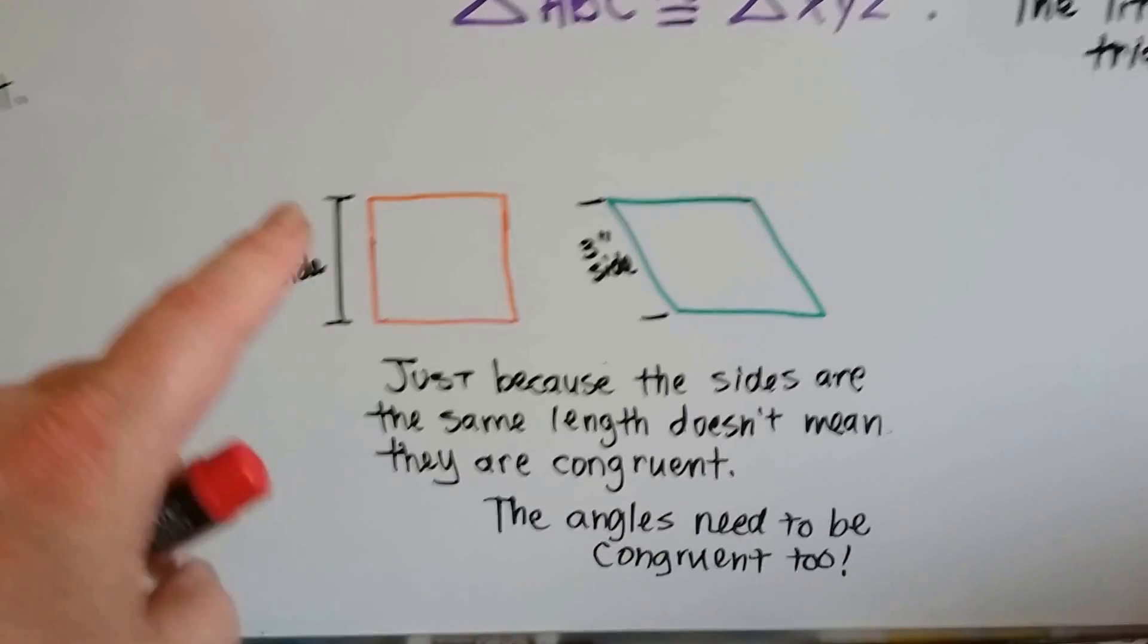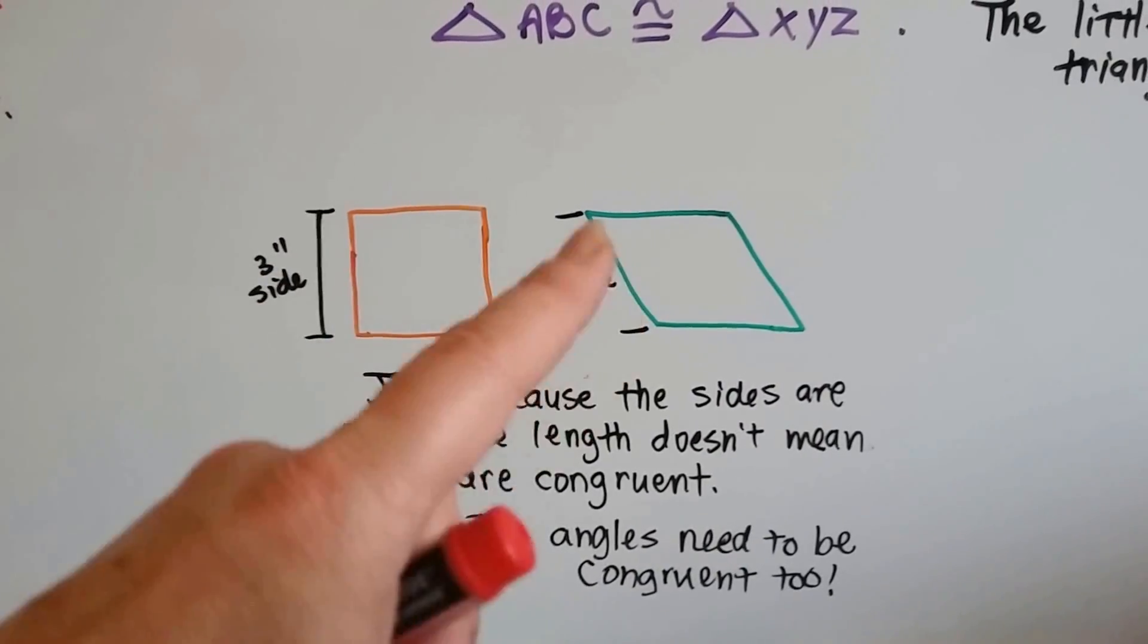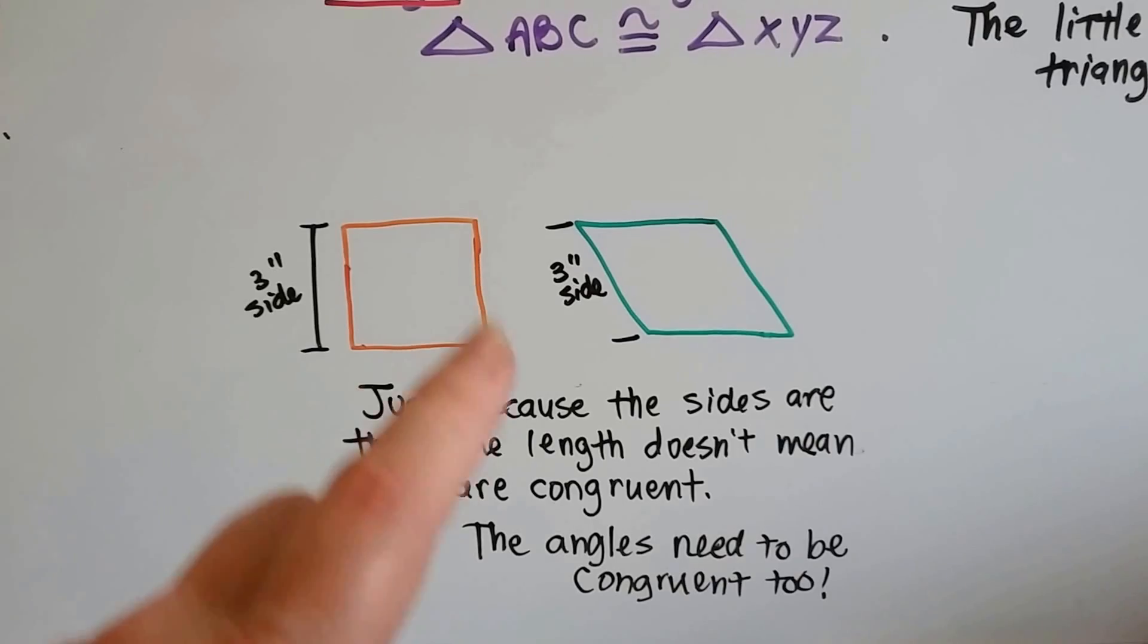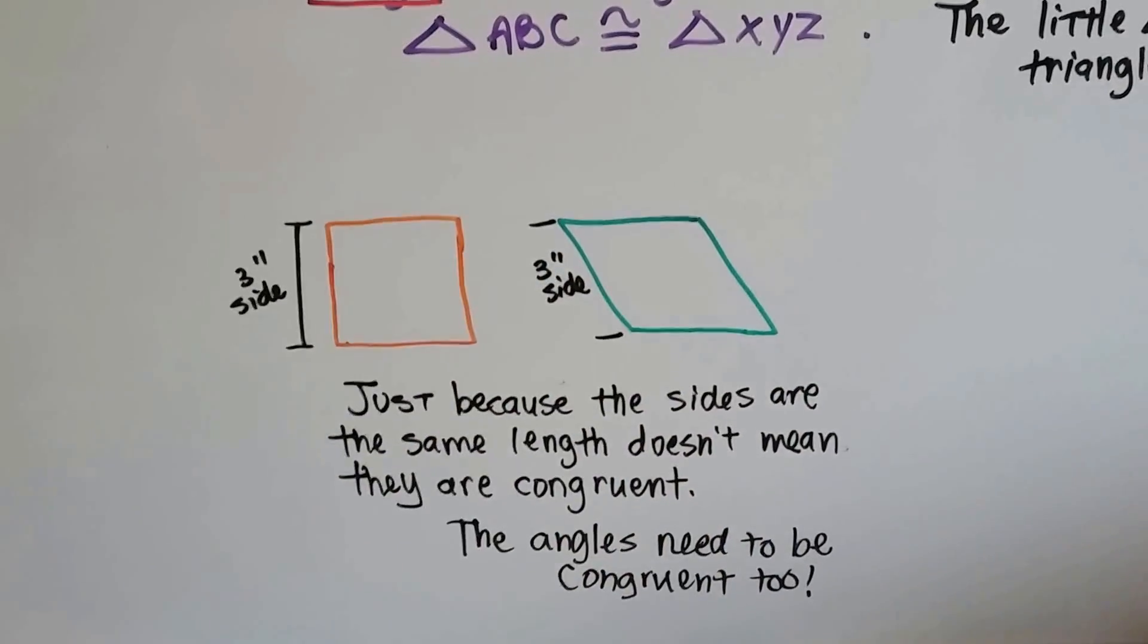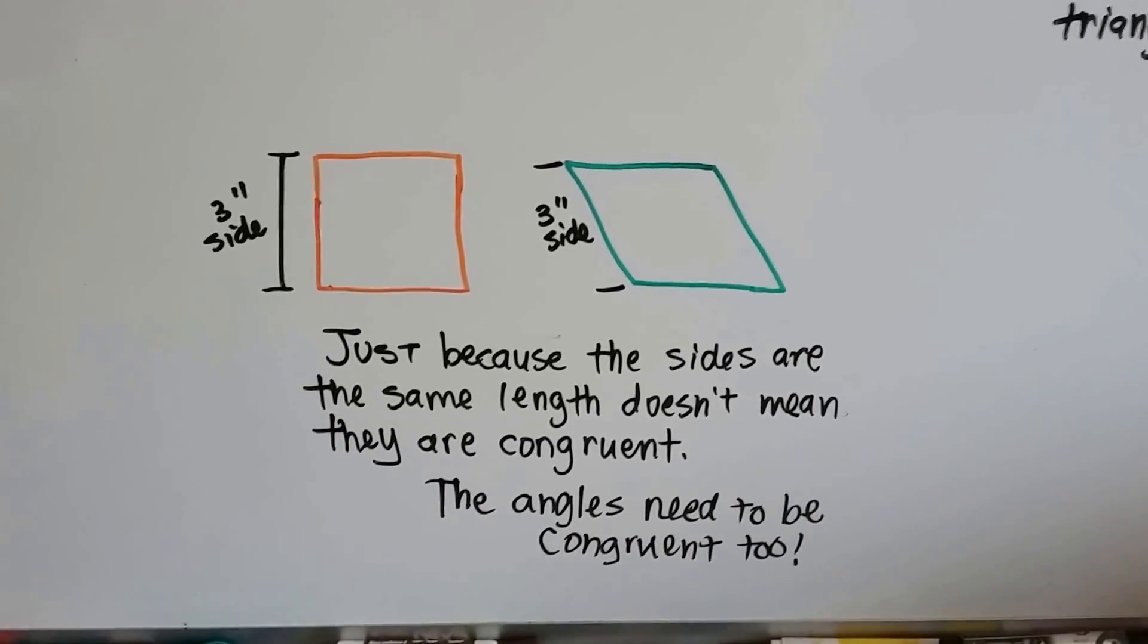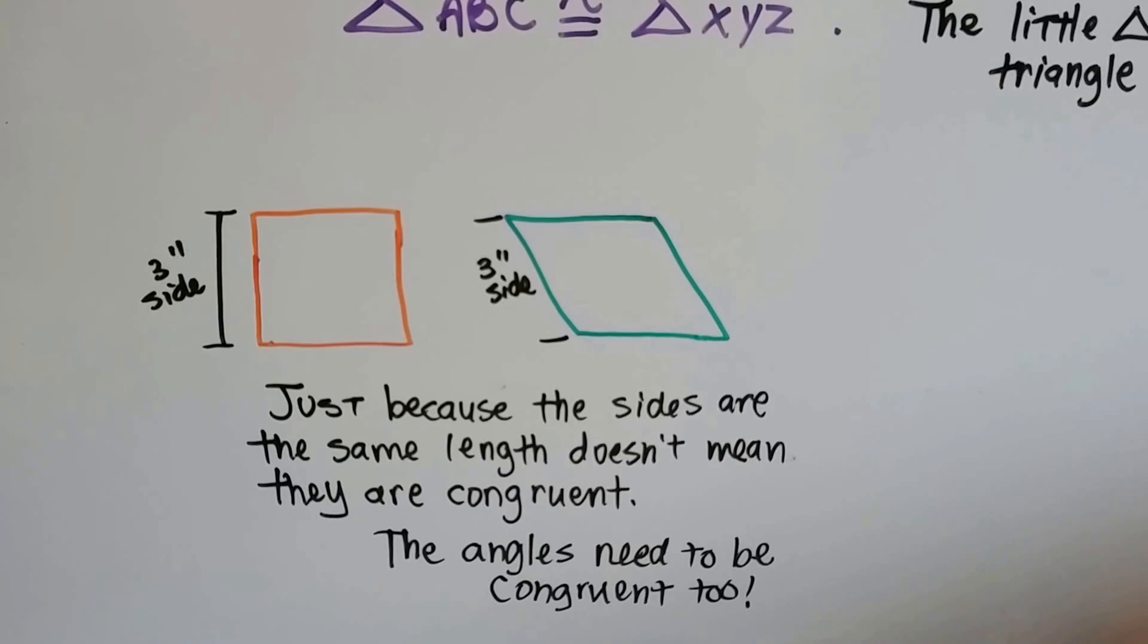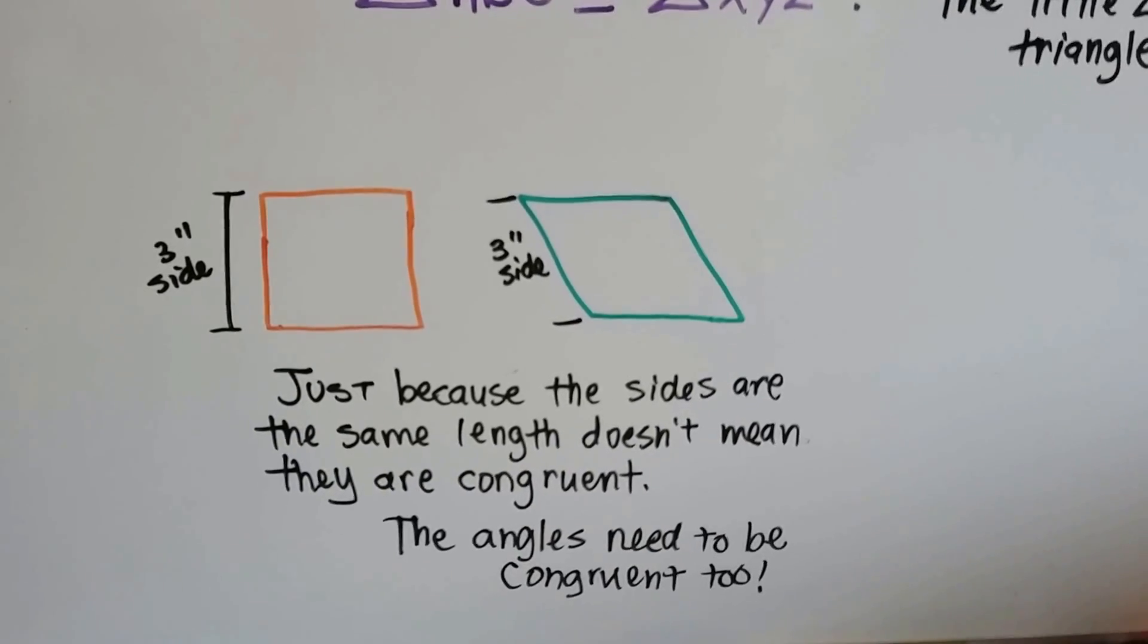Now, just because their sides are three inches doesn't mean they're congruent. That's got a three inch side. They don't have congruent angles, do they? This has 90 degree square angles and this one doesn't, does it? It's leaning off to the sides. So just because the sides are the same length doesn't mean they're congruent. One's a square and one's a rhombus, isn't it? They both have four sides. They both have four angles, but they're not congruent.